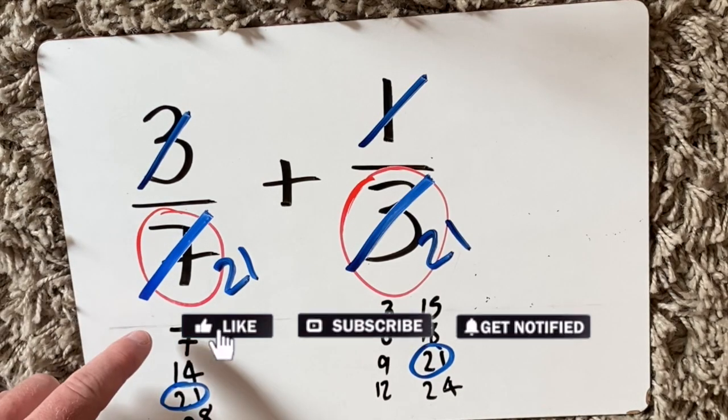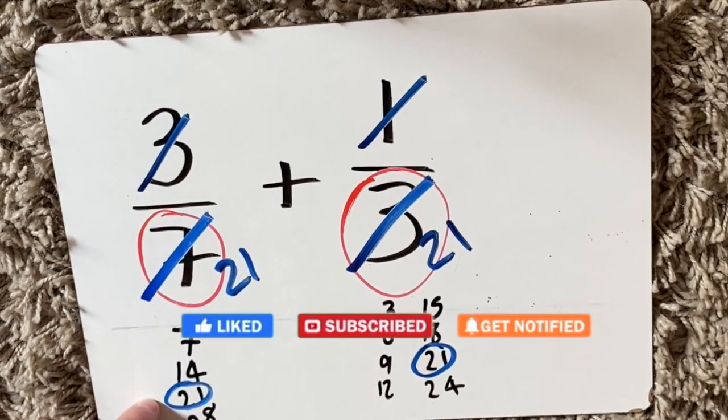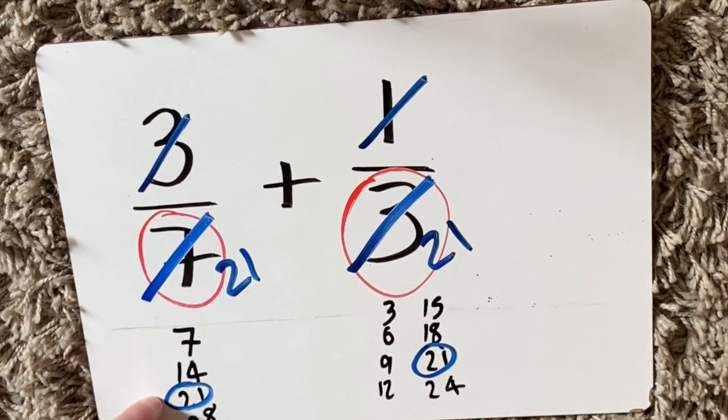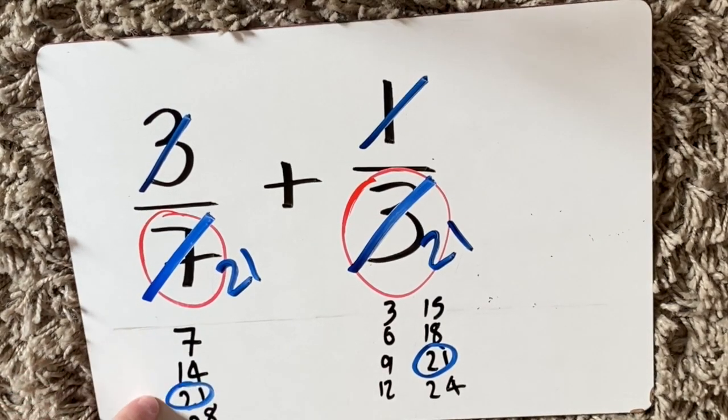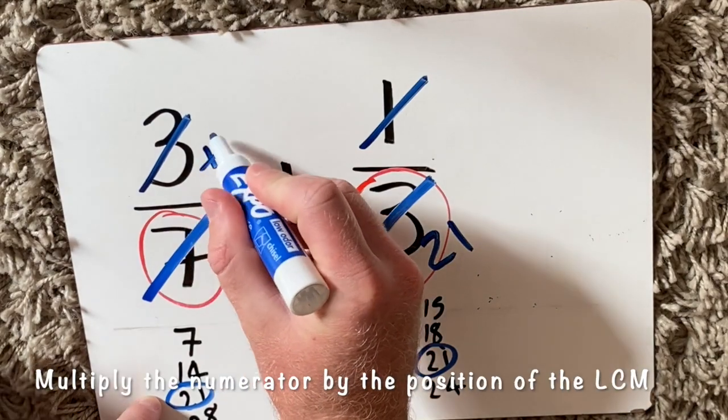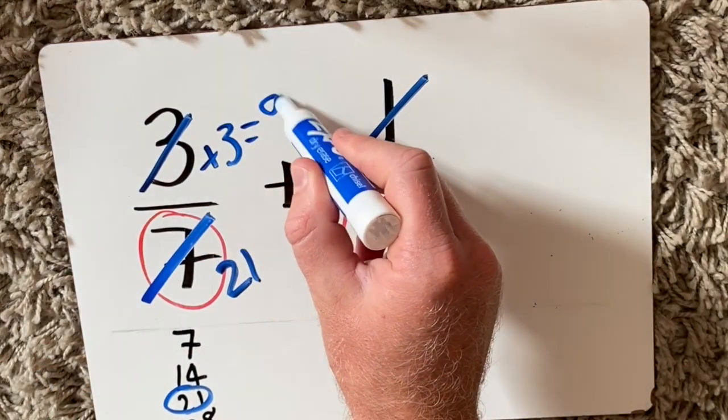You can see here that twenty-one was the third number in the times table. One, two, three. So I'm going to do three times three, and that's going to give me nine.